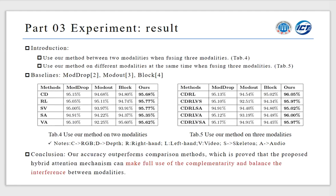Then we use our method between two modalities when fusing three modalities. The results are shown in Table 4 and use our method on different modalities at the same time when fusing three modalities. The results are shown in Table 5. From the results of these tables, we can know the accuracy of our performed other methods, which is proved that the proposed hybrid attention mechanism can make full use of the complementarity and balance the interference between modalities.